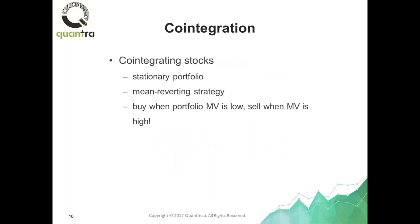Here you can see this price series again. This price series is in fact formed by shorting 1.6 shares of GDX and going long one share of GLD. And lo and behold, at least during that period — a one-and-a-half-year period — that portfolio is very, very much mean-reverting.